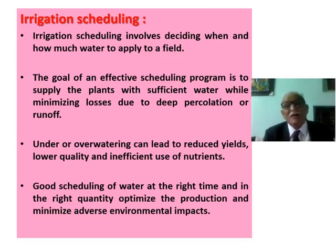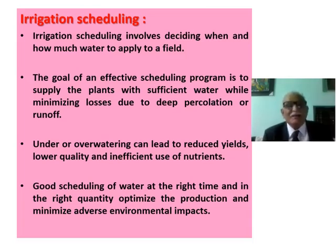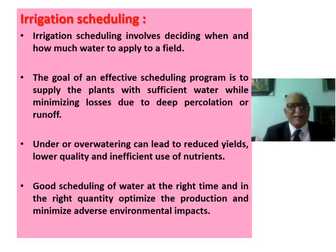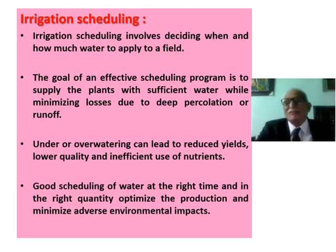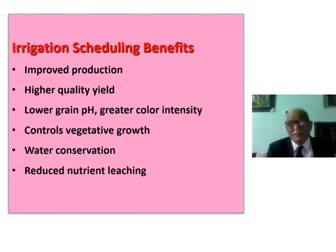Irrigation scheduling involves deciding when and how much water to apply to your field. The goal of an effective scheduling program is to supply sufficient water. Under-watering means deficit; over-watering means excess. Good scheduling ensures water is applied at the right time and in the right quantity.